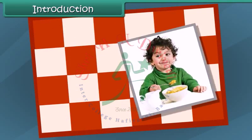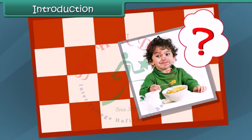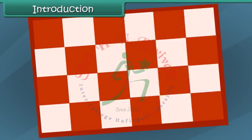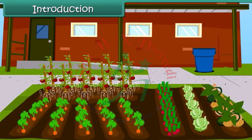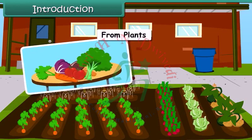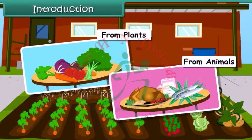Dear friends, do you know why we eat food? We eat food to grow and to get energy. And guess where does the food come from? We get food from plants and animals. Let's learn more about sources of food in detail.